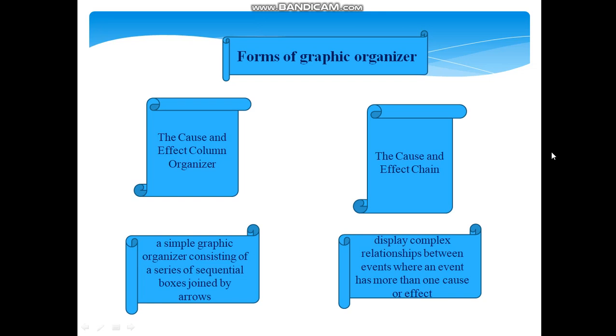As for the cause and effect chain, it is a simple graphic organizer consisting of a series of sequential boxes joined by arrows. Students record events in the boxes to display the relationships between them. As one event occurs, we can trace the subsequent event it causes easily. In this way, students can also usually comprehend how effects themselves become causes. Graphic organizers for complex events may also be useful to display complex relationships between events where an event has more than one cause or effect. Students simply add more arrows and boxes to display their relationships between different events. As students become more experienced and sophisticated in the approach, they will be able to tailor individual graphic organizers to meet the needs of the specific reading material they are engaged with.